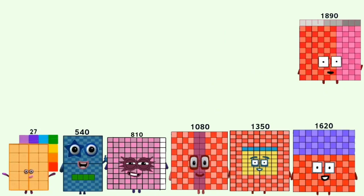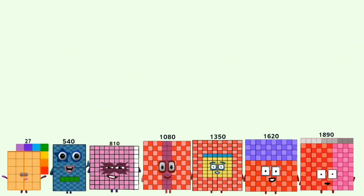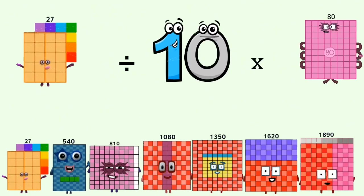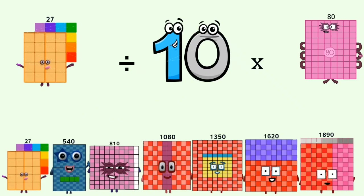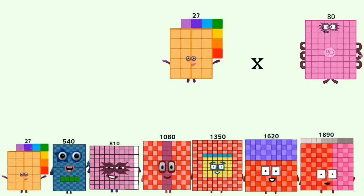Equals 1,890. 27 divided by 10 equals 2.7. 2.7 times 80.